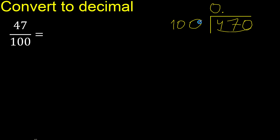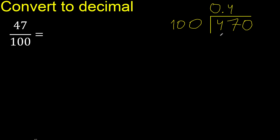470 is not less than 100. Multiply by which number is nearest to 470 but not greater. Multiply by 5 is 500 — that is greater. Multiply by 4 is 400. 400 is not greater, subtract — remainder is 70.